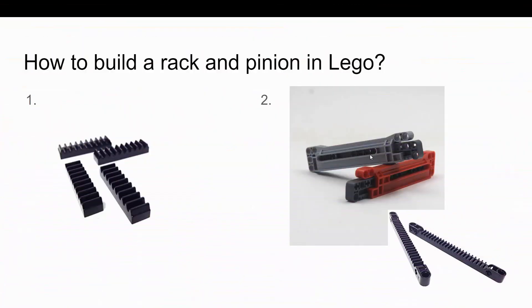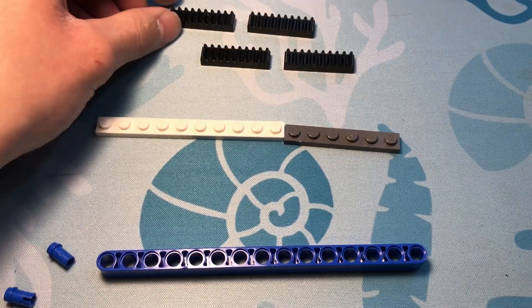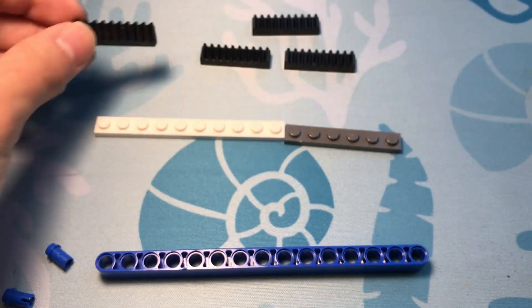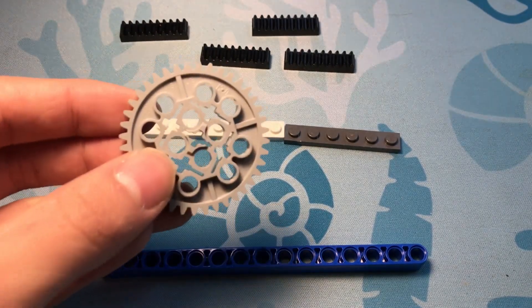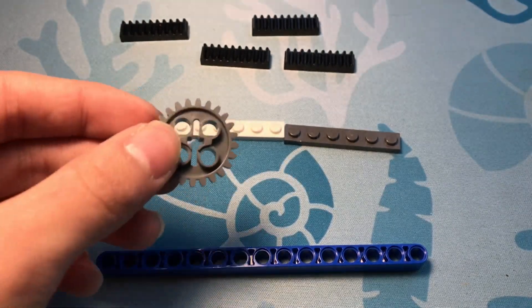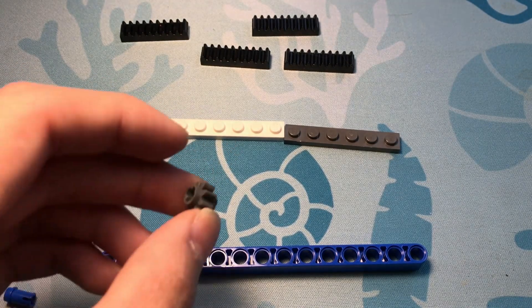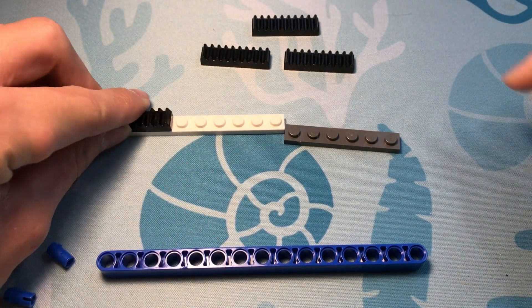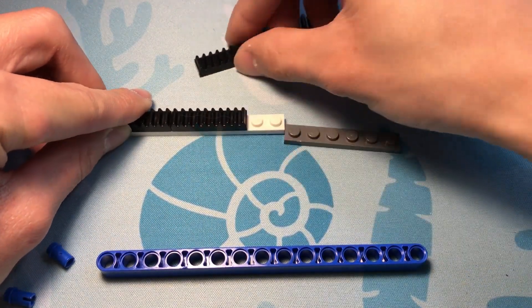So how do you build a rack and pinion in LEGO? The first way is to use these 1x4 rack and pinion plates that LEGO makes. So how do we make these plates compatible with 40 teeth gear, 24 teeth gear, and 8 teeth gear? Well, you have to stack these on top of plates first. So I'll stack them onto these plates.